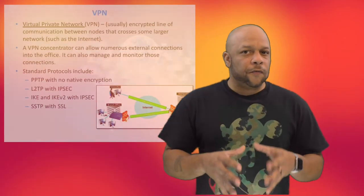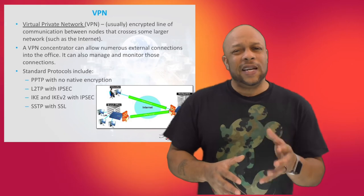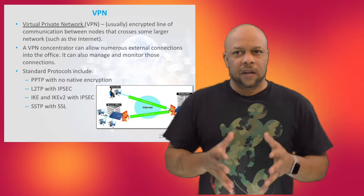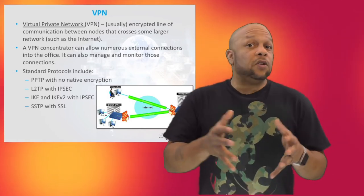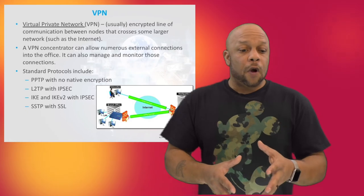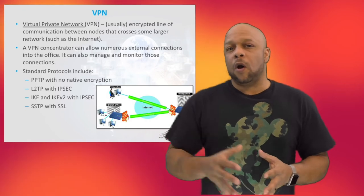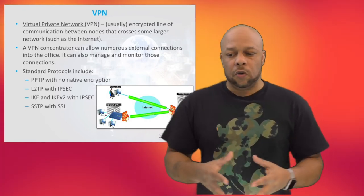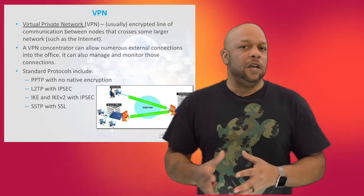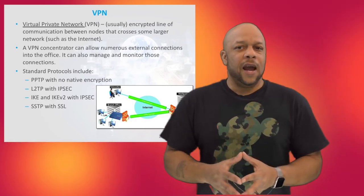VPNs, or Virtual Private Networks, grew in overall popularity because of the expense of leased lines or ISDN lines. With a VPN, you can carve out a piece of the internet to call your own, setting up an end-to-end encrypted tunnel for your data to flow through from one location across an untrusted network like the internet to a corporate office. Standard protocols used for VPNs include PPTP (Point-to-Point Tunneling Protocol), L2TP (Layer 2 Tunneling Protocol), IKE (the Internet Key Exchange), and SSTP.